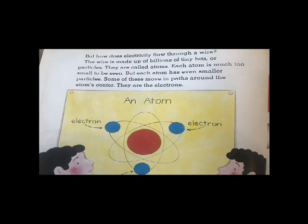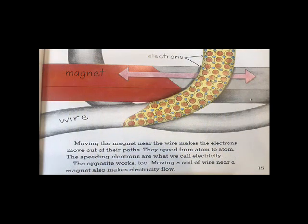But how does electricity flow through a wire? The wire is made up of billions of tiny bits or particles. They are called atoms. Each atom is much too small to be seen. But each atom has even smaller particles. Some of these move in paths around the atom's center. They are the electrons. Moving the magnet near the wire makes the electrons move out of their paths. They speed from atom to atom. The speeding electrons are what we call electricity.